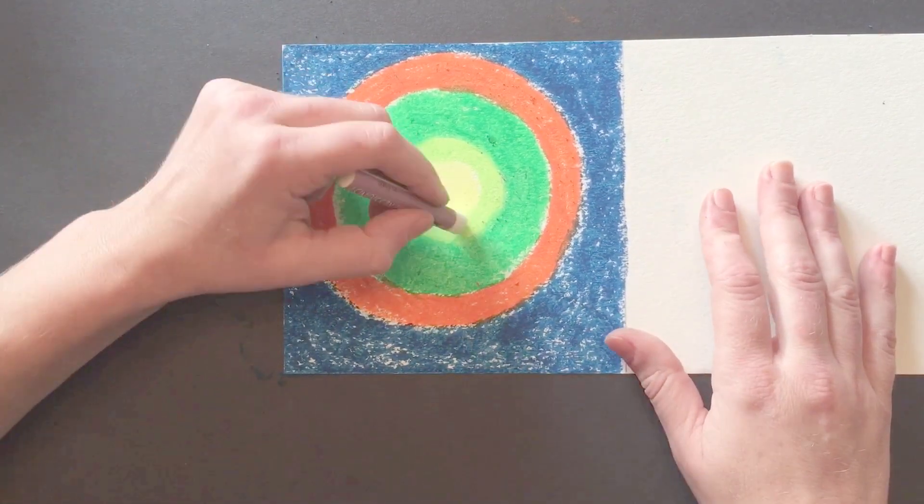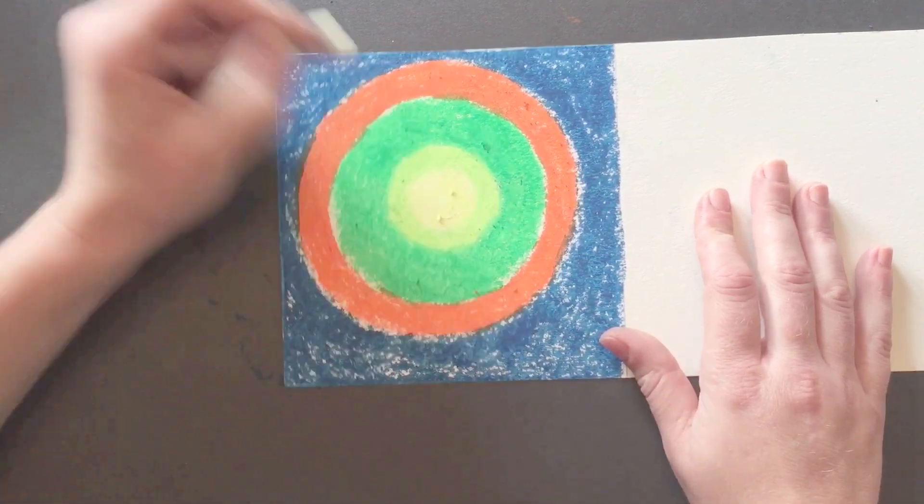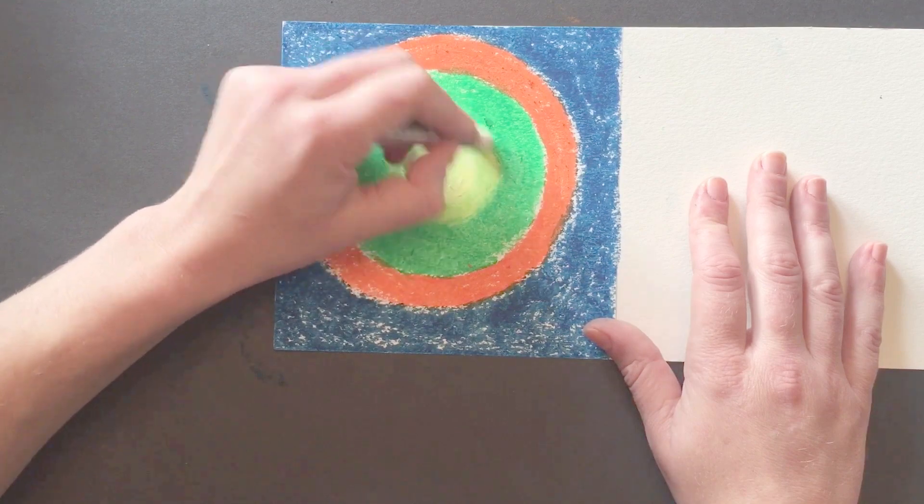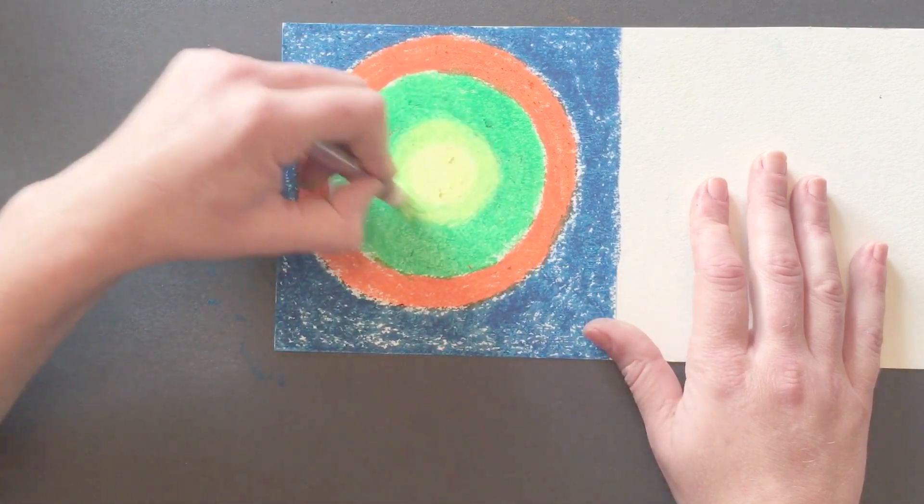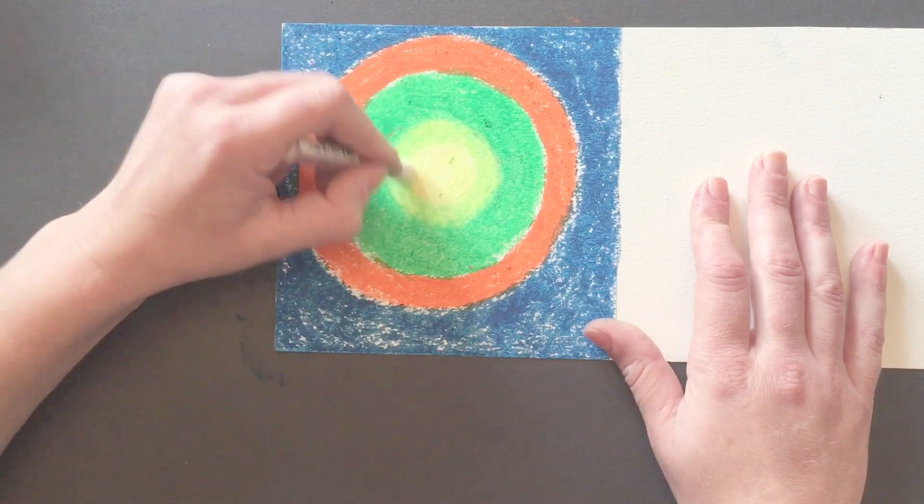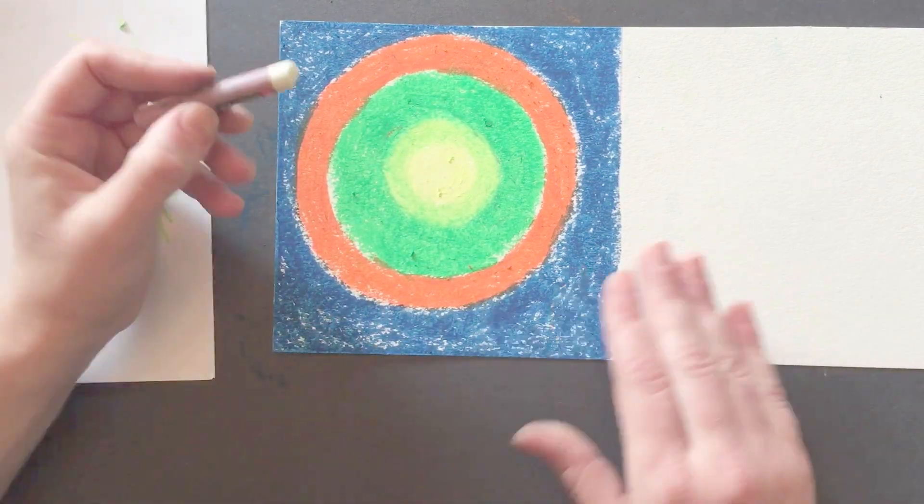As an option, you can use a clear pastel to blend your colors and make any rough or sloppy coloring smooth. Simply color over your circles one color at a time and the surface will become smoother. Clean your clear pastel off in between colors to avoid unwanted color mixing.